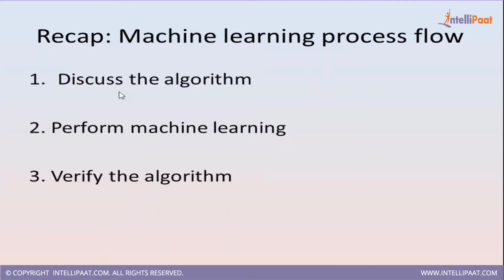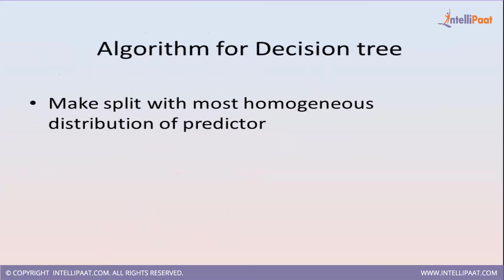Next we will discuss the algorithm we are going to follow in making this decision tree. The algorithm is: make a split with most homogeneous distribution of the predictor. So let's say my prediction is about job change. I will carefully decide what will be the first factor on which I will make up my mind, then add the next factor and then the next factor. While deciding about the factor I will take care of most homogeneous distribution.